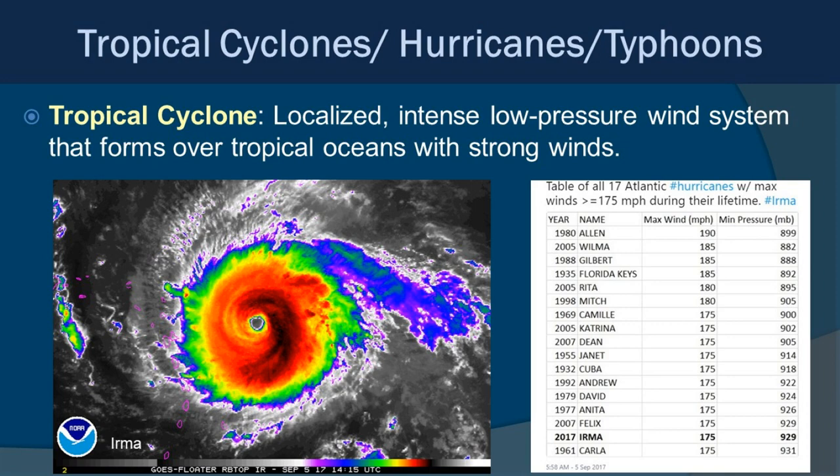If you look at the table on the right, you'll also notice the pressure listed for some of these storms — the lower the pressure, the stronger that low-pressure system is, generally meaning stronger winds and a more damaging storm. You can see where Hurricane Irma ranks in 2017 with sustained winds of 175 miles per hour and 929 millibars of pressure at the center.